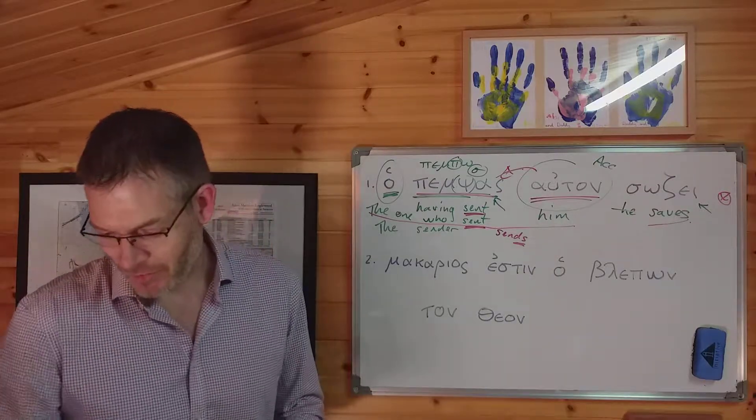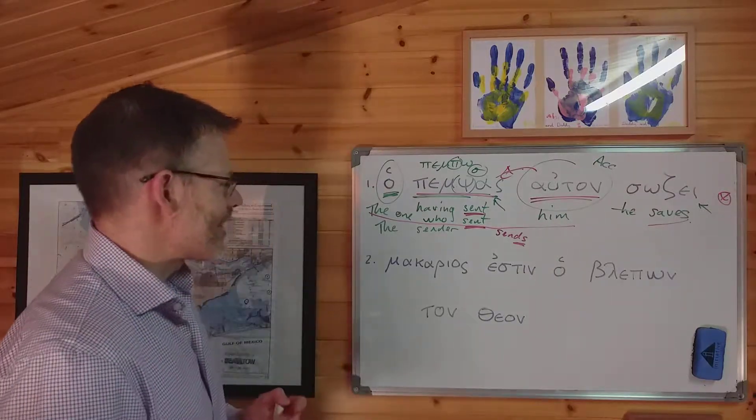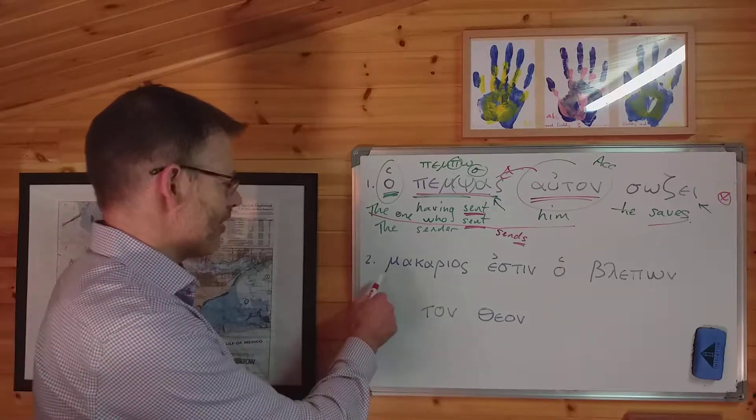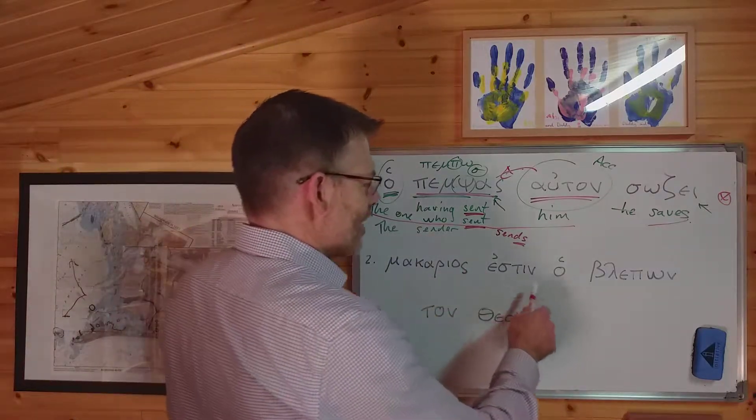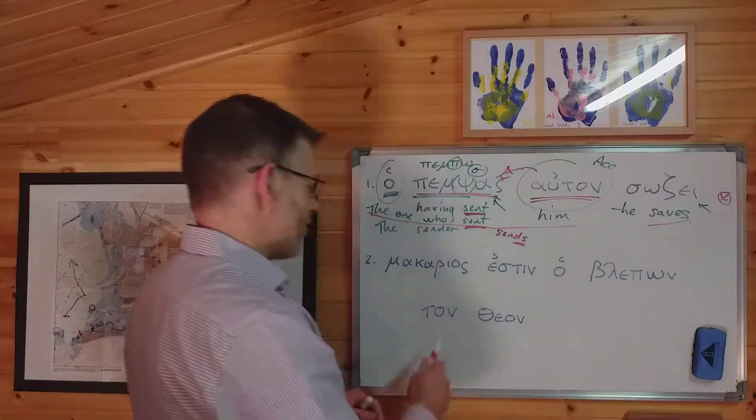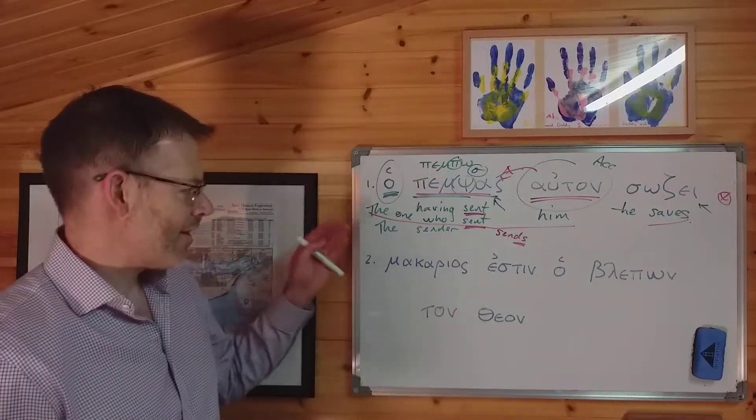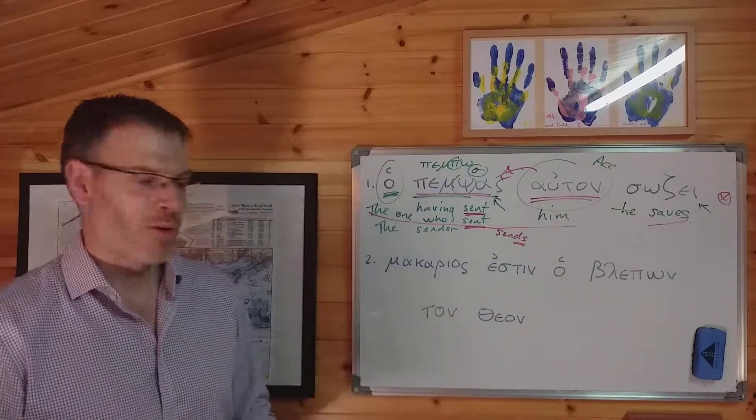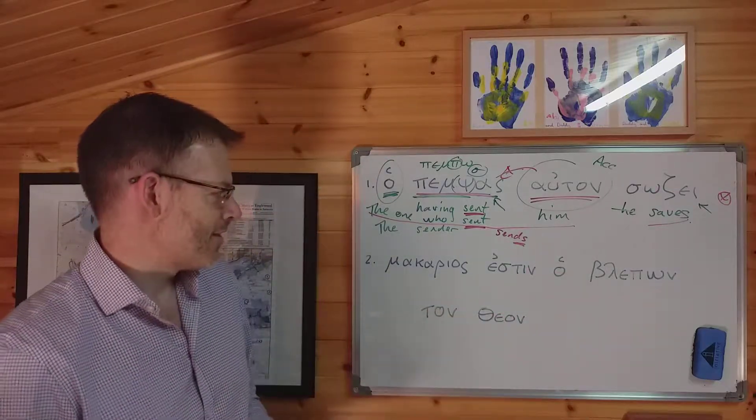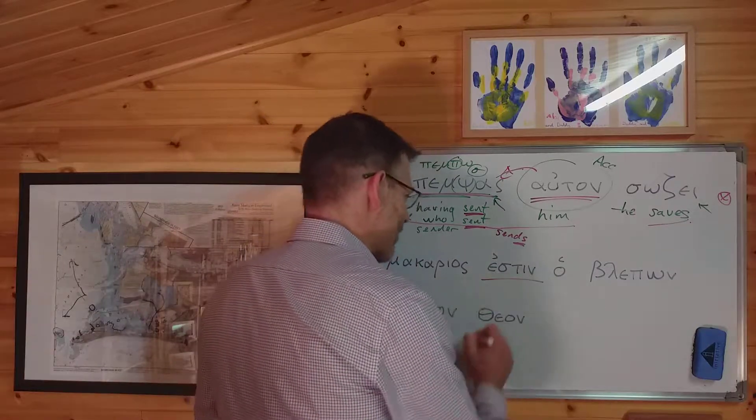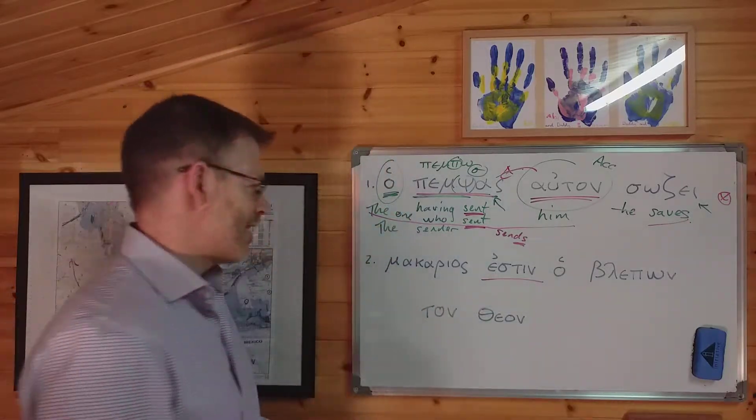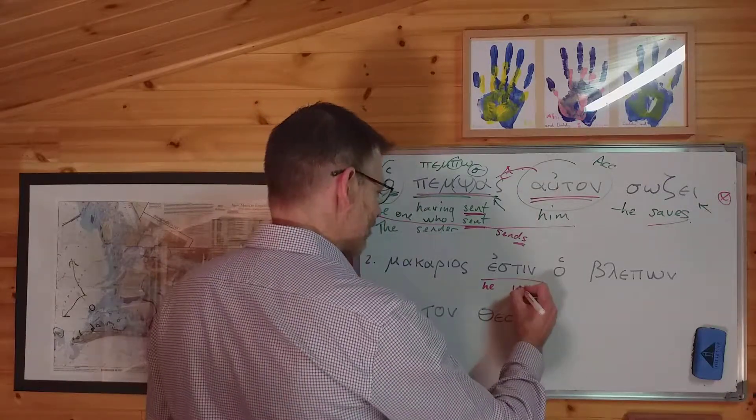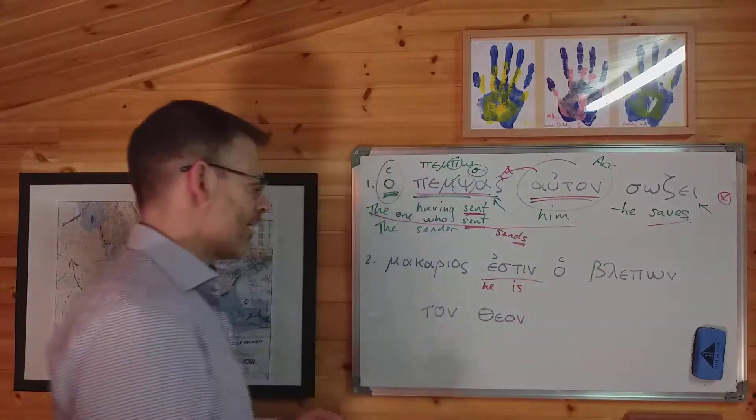Okay, let's look at question two. We've got it right here, again, in Duff's book, just to illustrate the point about participles. Number two, makarios estin ho blepon ton theon. Makarios estin ho blepon ton theon. And what have we got here? Well, as always, first thing you do, find the verb. There it is, and it means he or she or it is. So there we are.